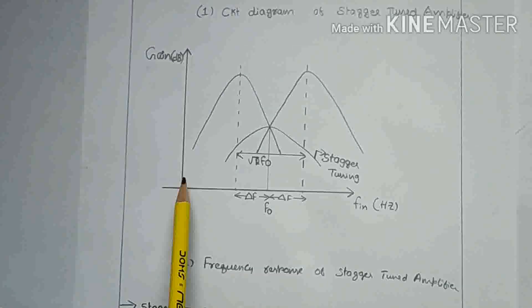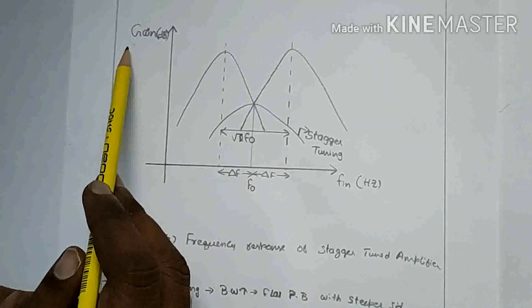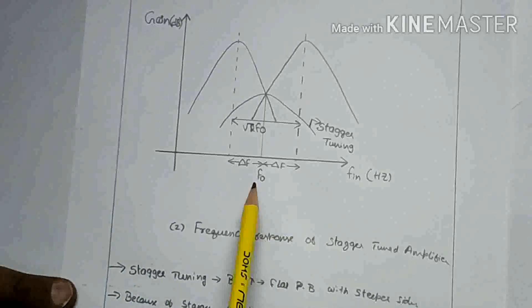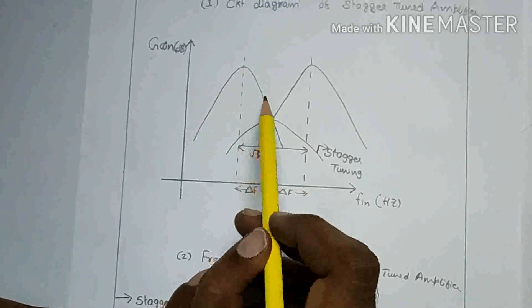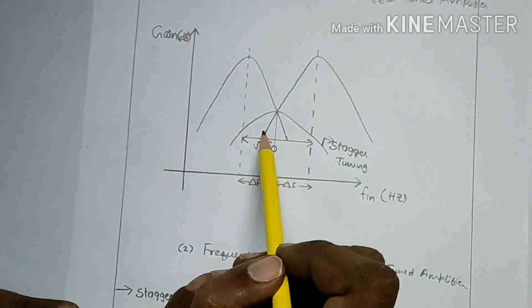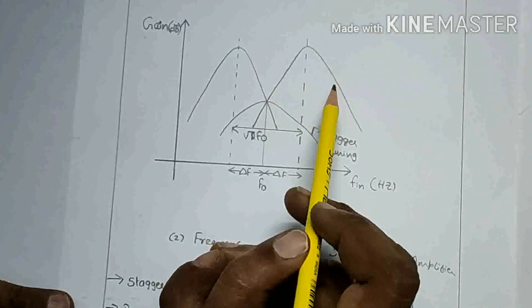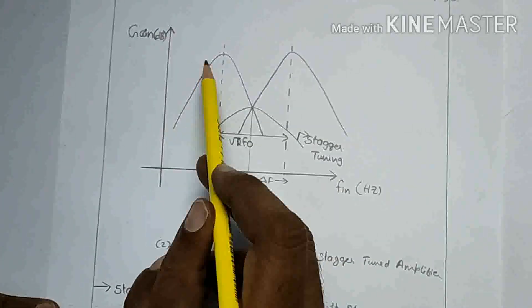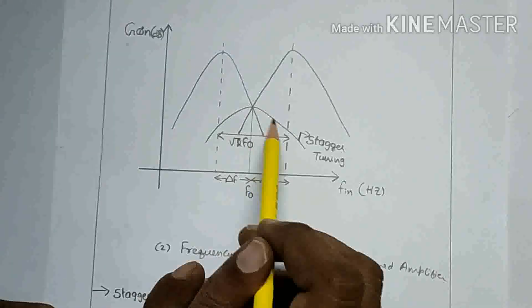The frequency response is the graph plotted between frequency versus gain in dB. This is the frequency response of the stagger-tuned amplifier. This is the frequency response of a single-tuned capacitance-coupled amplifier for the first stage, and this is the second stage single-tuned capacitance-coupled amplifier. The combination of the two stages gives the stagger-tuned response.